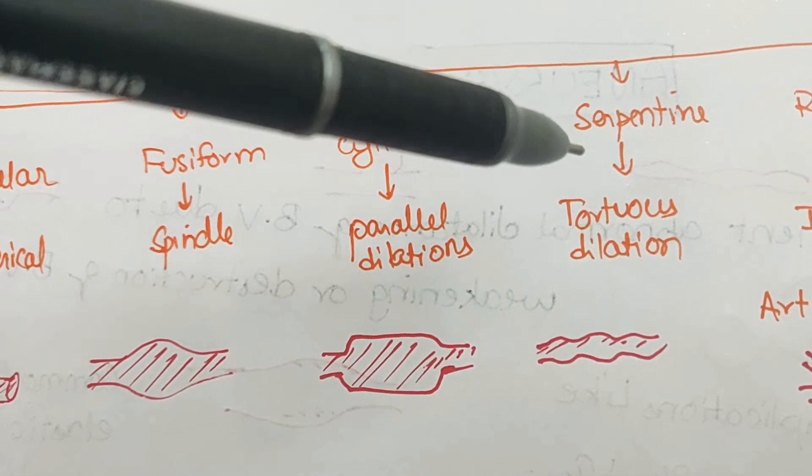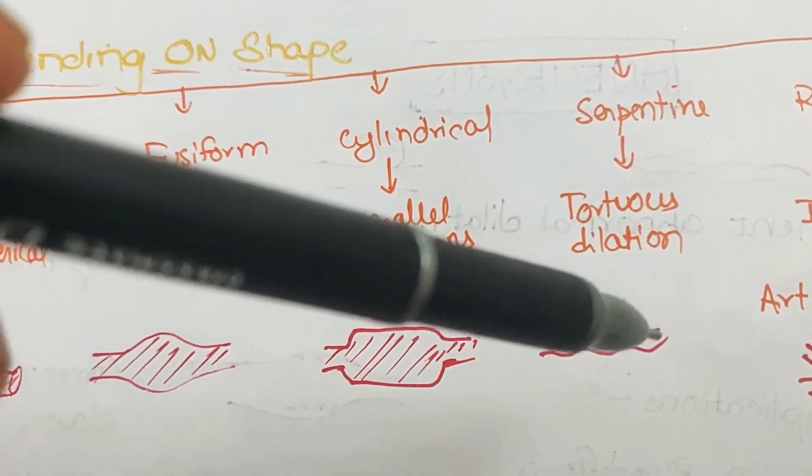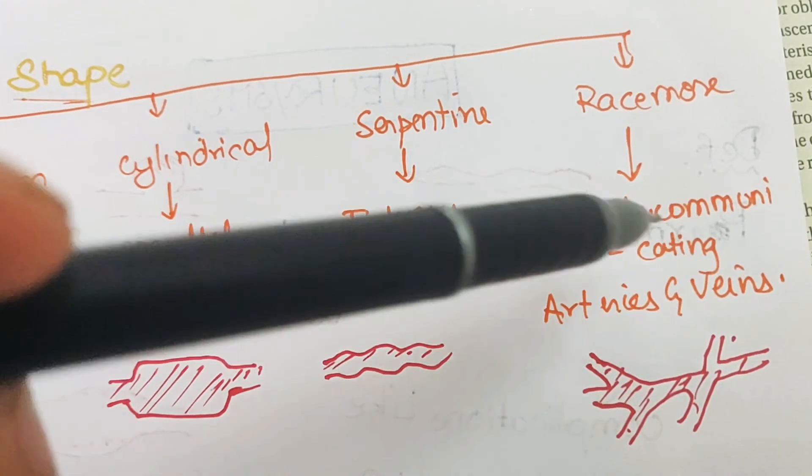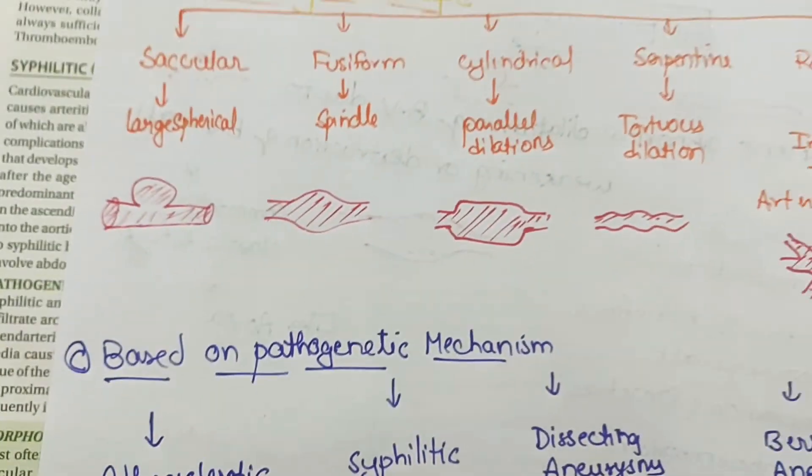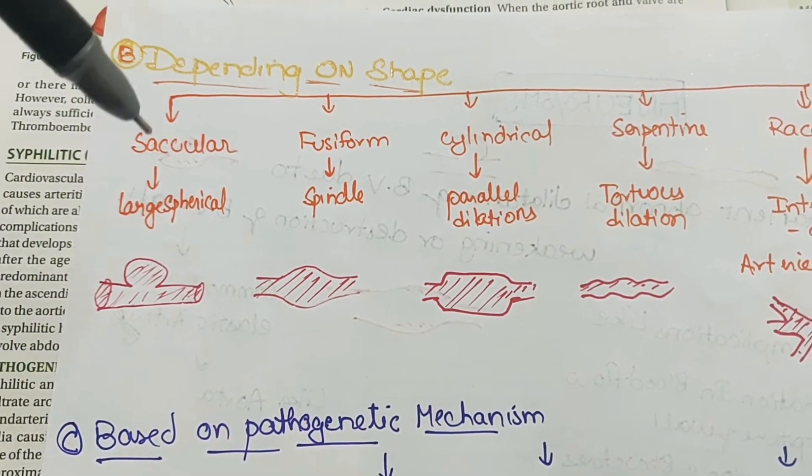Next, we have serpentine which means tortuous dilation, and we have racemose which means between the interconnecting arteries and veins there is a dilation. You can see these are the types depending on the shape.